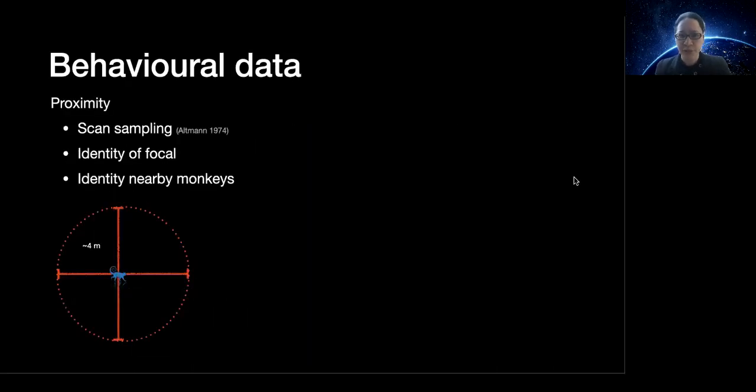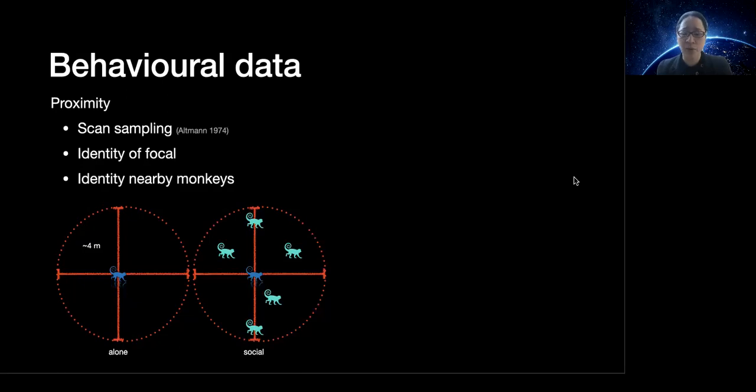I'm going to present to you behavioral data collected from group scan sampling. During a scan, we record the identity of an individual. We also record the identity of any other monkey within approximately four meters of that subject. Using proximity data, we can generate a very coarse-grained measure of sociality based on whether or not an individual subject is social or alone.